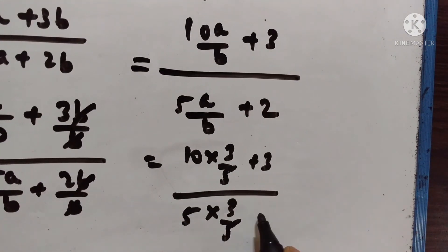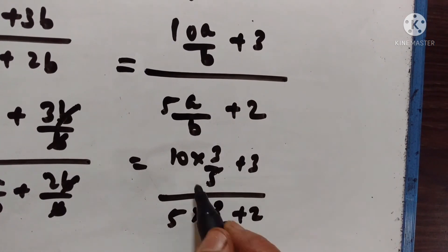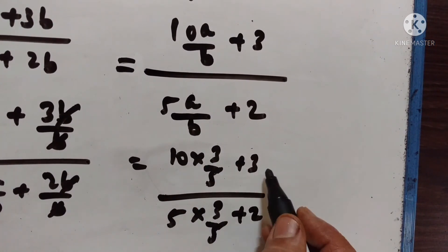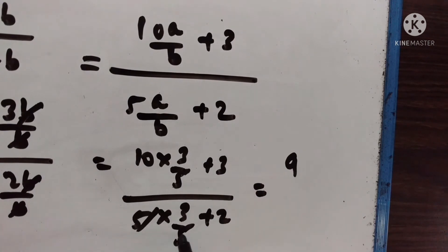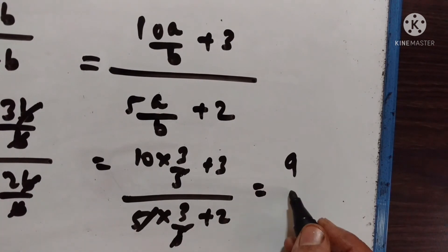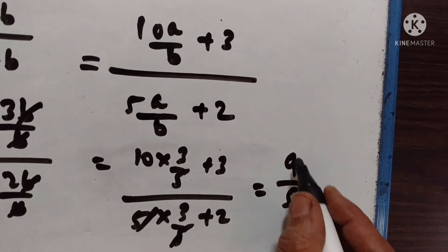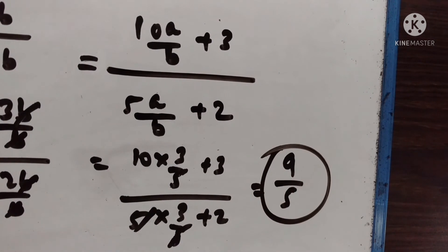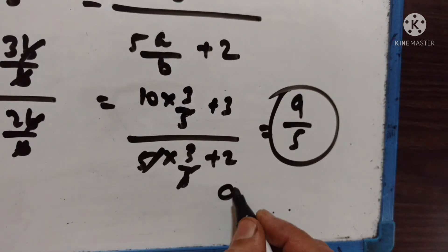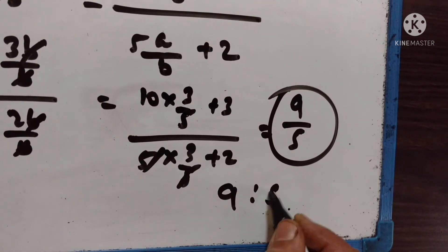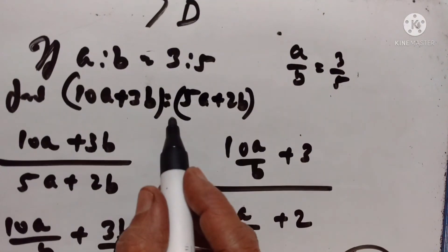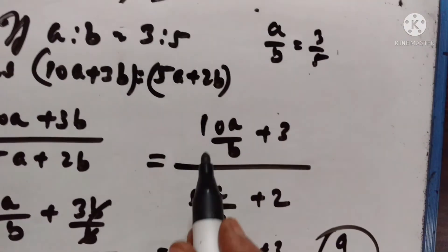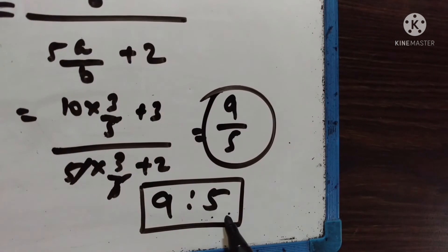Substituting a upon b equals 3 upon 5: we get 10 into 3 upon 5 plus 3 upon 5 into 3 upon 5 plus 2. That is 6 plus 3 upon 3 plus 2, which is 9 upon 5. So the value of 10a plus 3b upon 5a plus 2b is equal to 9 is to 5.